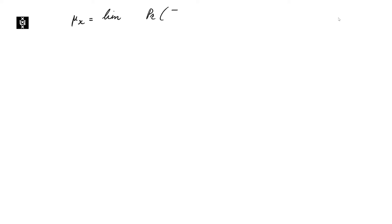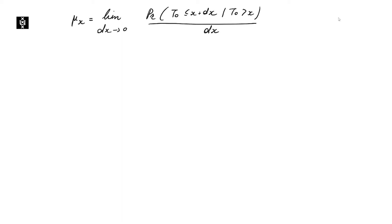On Monday, we introduced the force of mortality with this particular definition. We consider the probability that a zero-year-old who reaches age X is going to die right after reaching age X, divide this probability by the length of the considered time interval, and let this length run to zero. This is the formal definition that we gave.